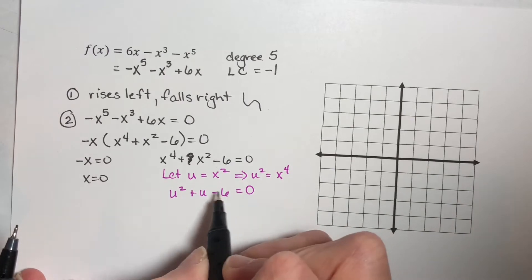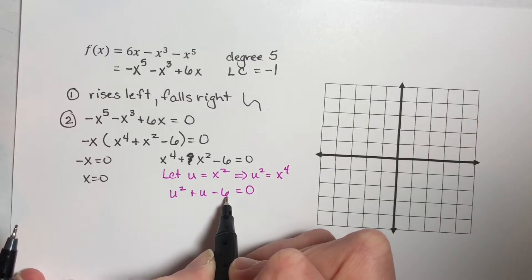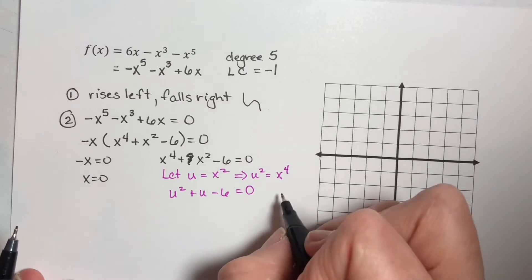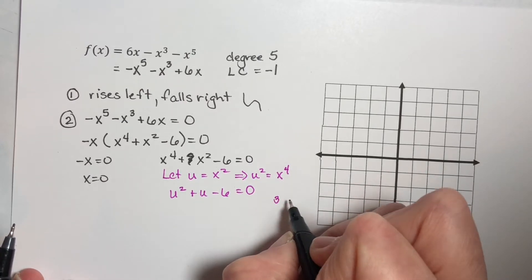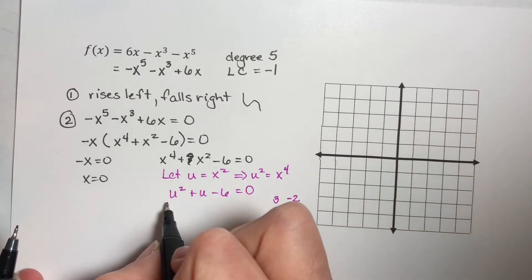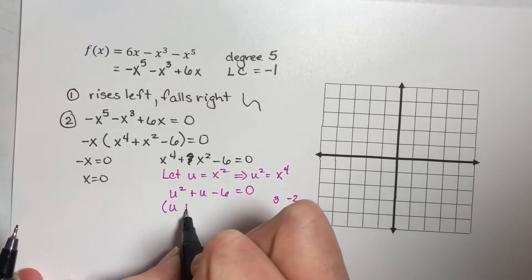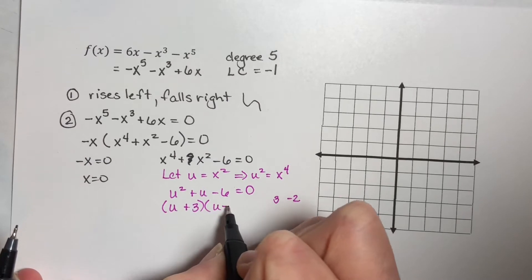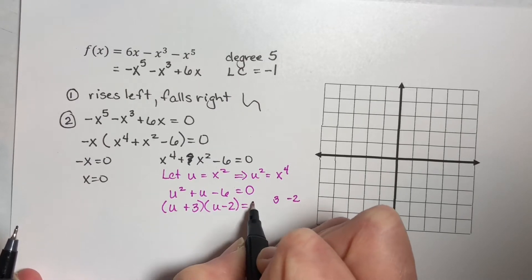So this factors, if I'm looking for two numbers that multiply to a negative six and that add to a positive one, I can use positive three and negative two. So this factors as u plus three, u minus two is equal to zero.